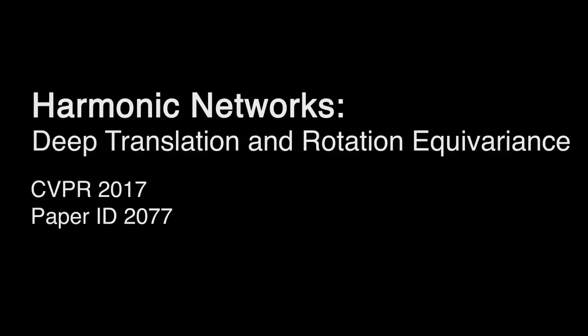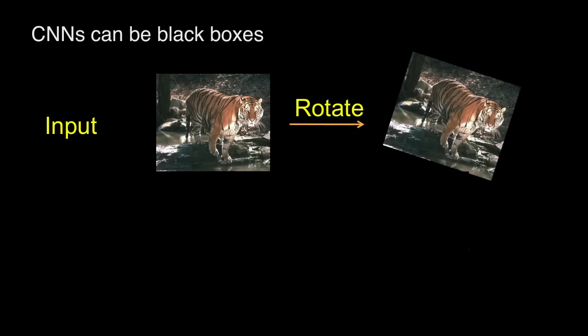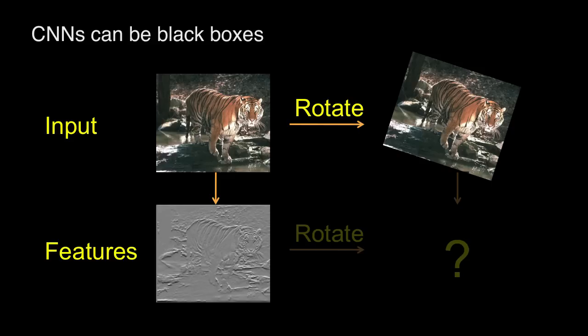We present harmonic networks for deep translation and rotation equivariance. Take this tiger. If we rotate it, how would its deep feature representation transform? It's difficult to predict. This is a common criticism of convolutional neural networks.